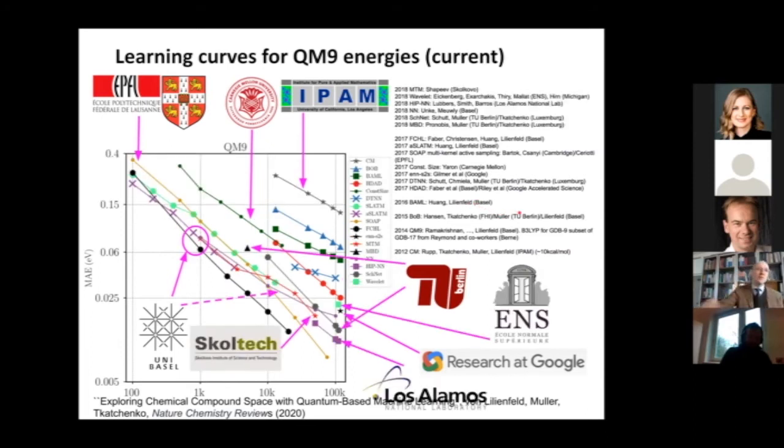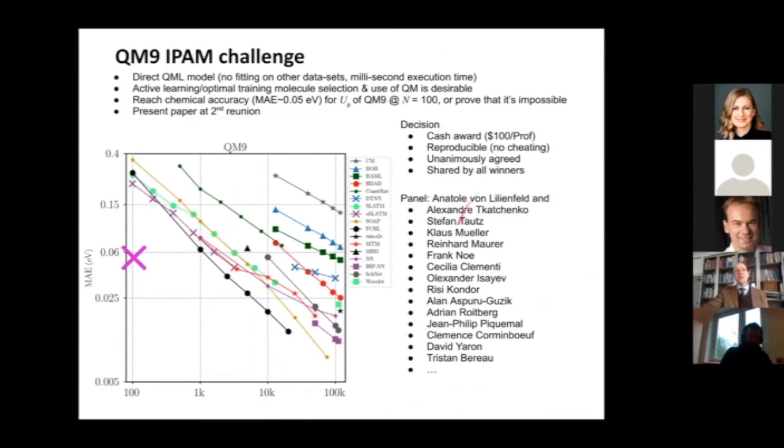This DTNN is a deep tensor neural network. More recently, these are kernel methods with new representation based on distributions rather than on vectors, giving even better performance. The most recent picture looks like this. You see many different groups from around the world contributed models here. Generally, among the best neural networks are these purple squares, but usually the kernel ridge regression methods seem to outperform everybody else.